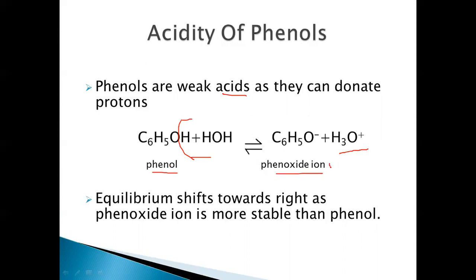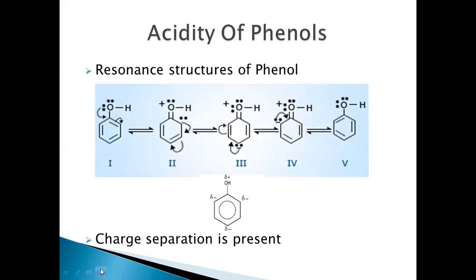Phenols are acidic because the phenoxide ion is more stable than phenol. This can be explained based on the mesomeric effect. The equilibrium will shift towards the right side — towards the phenoxide ion side — because the phenoxide ion is more stable than phenol. This stability can be explained based on the mesomeric effect and resonance. Let's look at the resonance structures of phenol.